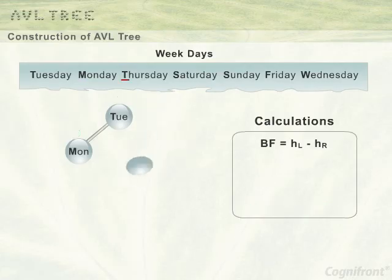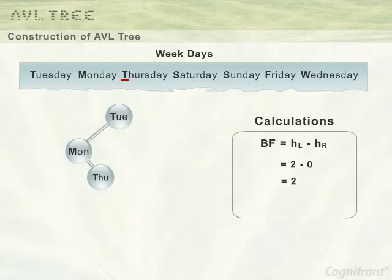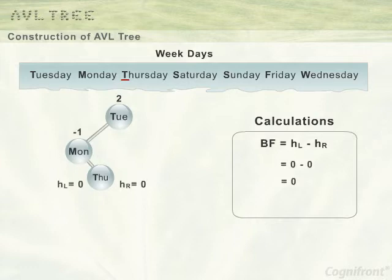Then comes Thursday, which is smaller than Tuesday but greater than Monday, so it is inserted to the right side of Monday. When Thursday is inserted, the height of the left subtree of Tuesday becomes 2 and the right subtree is 0. So the BF of Tuesday is now 2, while that of Monday is minus 1 and Thursday is 0.